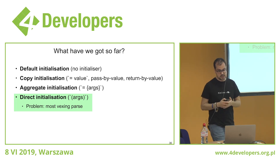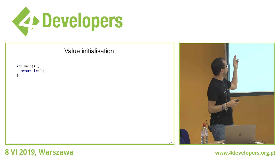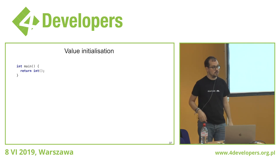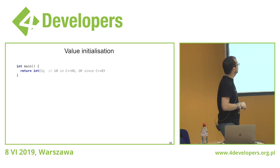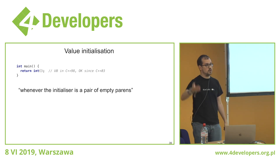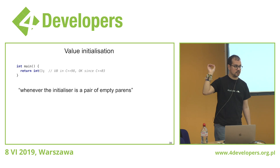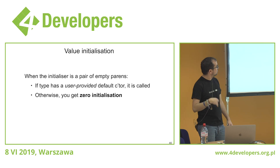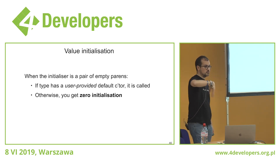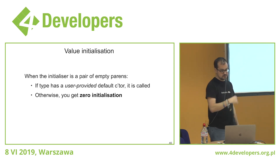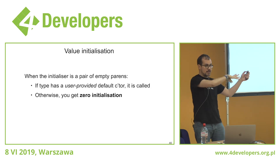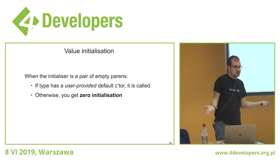The next type is value initialization. What does a program with `int i = int()` do — is this undefined behavior? It returns zero. In C++98 this was undefined behavior, but since C++03, this returns zero because C++03 introduced value initialization. Value initialization is whenever the initializer is a pair of empty parentheses. What does value initialization do? If the type has a user-provided default constructor, it calls that default constructor. But if you don't have a user-provided default constructor, you get zero initialization — so it's not uninitialized, it's zero initialized.